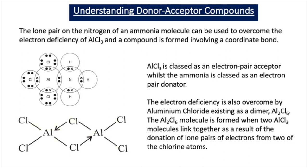There are two ways that these electron-deficient compounds can overcome the electron deficiency. The first way is to accept a pair of electrons and form a coordinate bond from another molecule or ion — we call these donor-acceptor compounds. For example, AlCl3 could form a coordinate bond with a lone pair of electrons from ammonia. This slide shows a dot and cross diagram representing the bonding in the donor-acceptor compound AlCl3·NH3, showing the coordinate bond between the nitrogen of ammonia and the AlCl3.